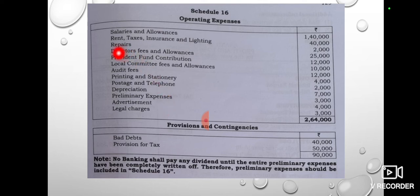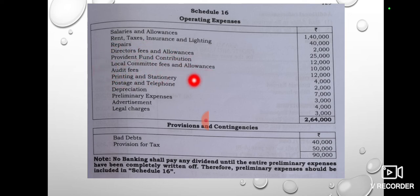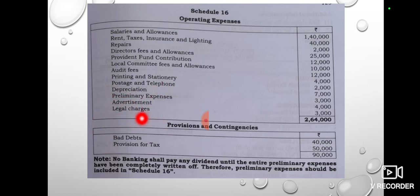Schedule Number 16 includes several items to pay: salary, rent, repair, director fees, provident fund contributions, local committee fees, audit fee, printing and stationery, postage, telephone, depreciation, and preliminary expenses.